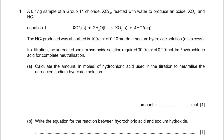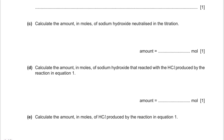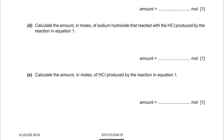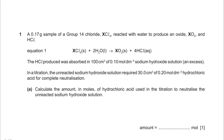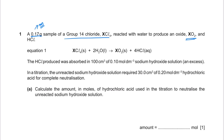So let's start with this question. This is basically from October/November 2016, Paper 21. They say that a 0.17 gram sample of a group 14 chloride reacted with water to produce an oxide and HCl. So when XCl₄ reacts with water, where X is an element of group 14, we get XO₂ and HCl. Let's call this equation 1.